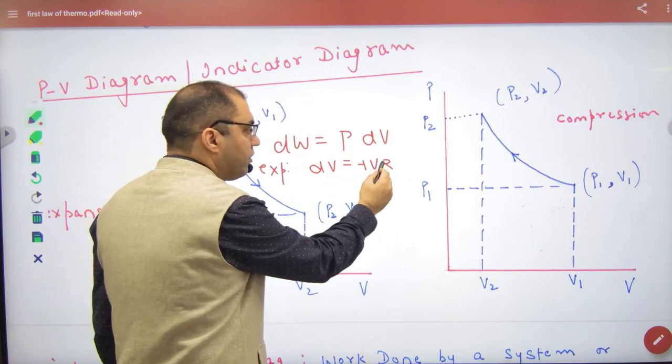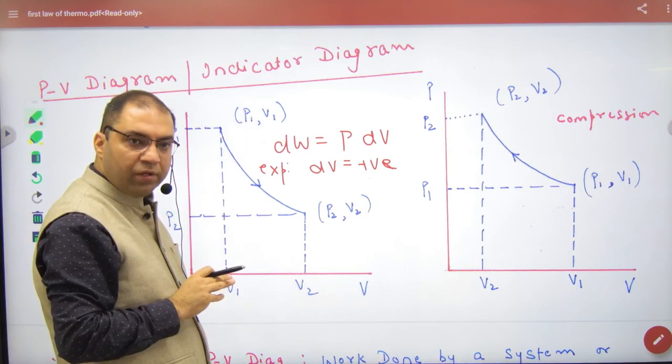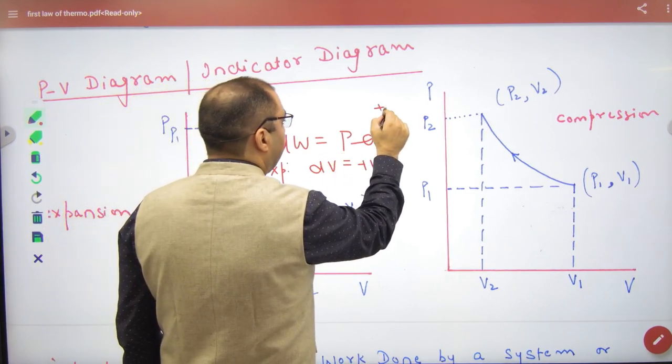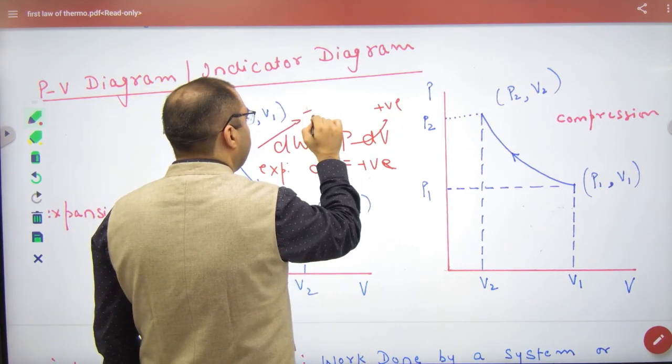What will be final volume? Positive. Initial Negative. What will be positive? What will be work done? Positive.